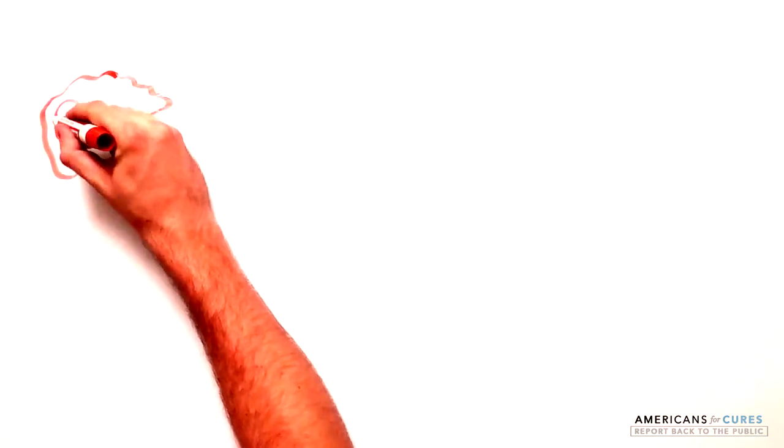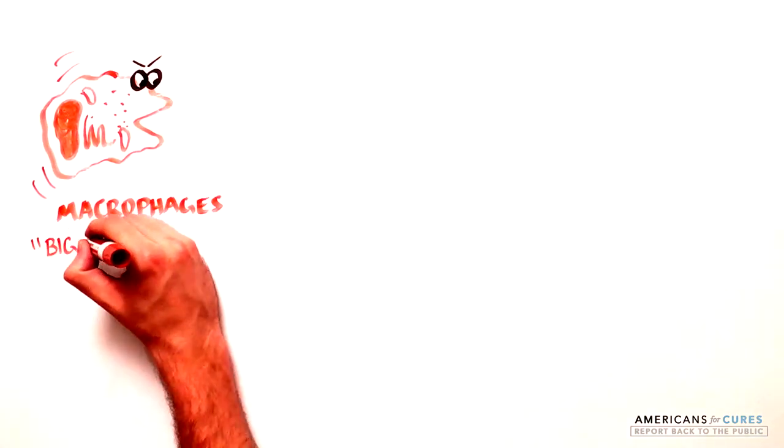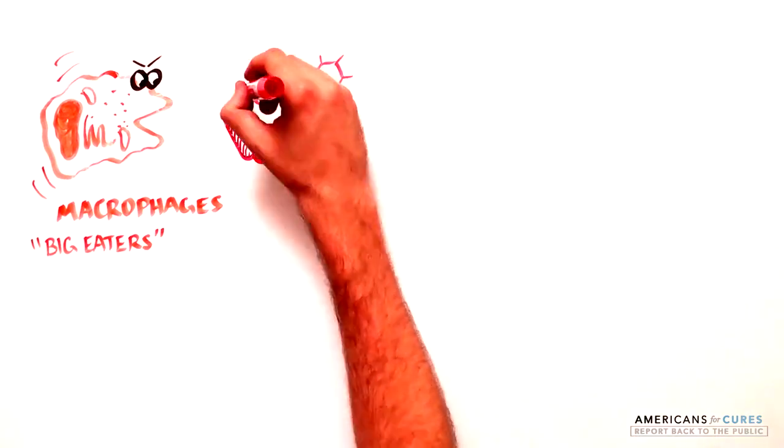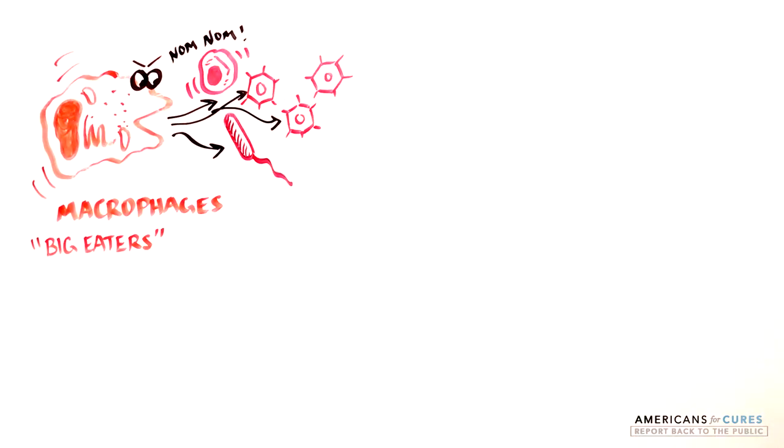Normally, you have special immune cells known as macrophages, literally big eating cells, that physically gobble up bacteria or abnormal cells, such as cancer cells.